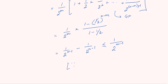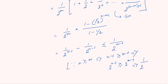This is because n greater than or equal to m implies n minus 1 is greater than or equal to m minus 1, which implies 2^(n-1) is greater than or equal to 2^(m-1), and therefore 1 by 2^(n-1) is less than or equal to 1 by 2^(m-1).